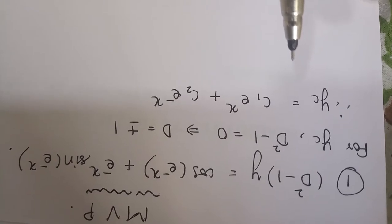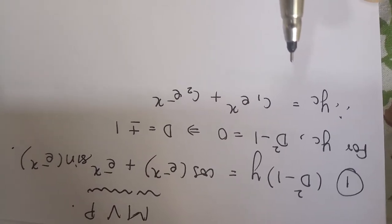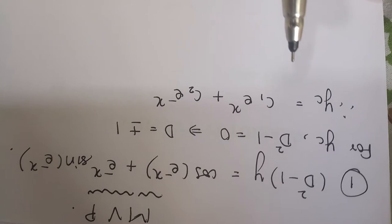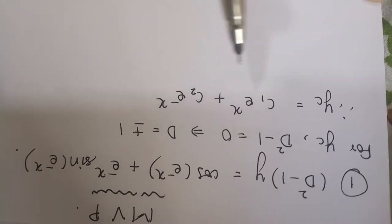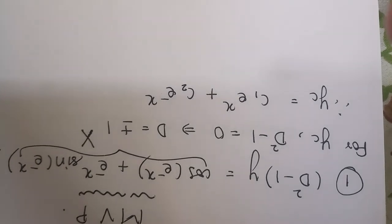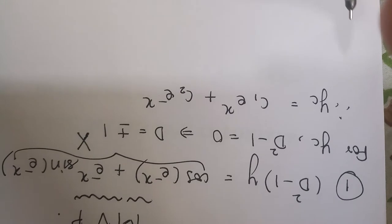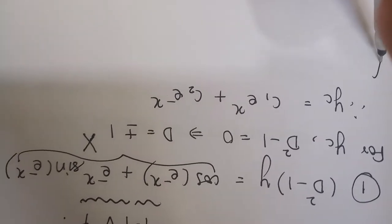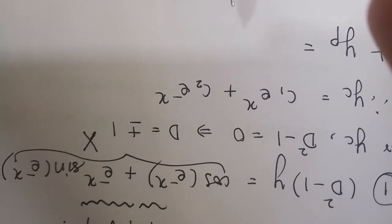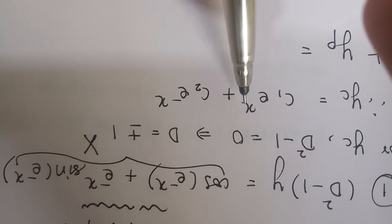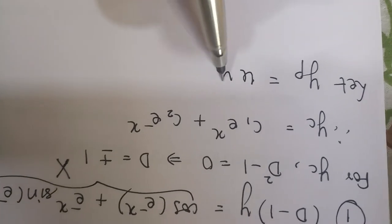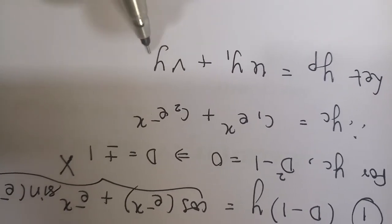Now, until today we used to find yp by using the formula yp equals 1 upon f(D) acting on capital X. But now in the Method of Variation of Parameters, we assume yp based on yc. If your yc is c1 e raised to x plus c2 e raised to minus x, we assume yp as u into y1 plus v into y2.